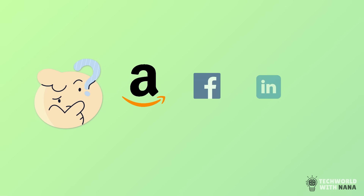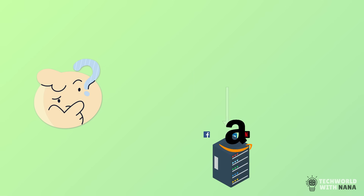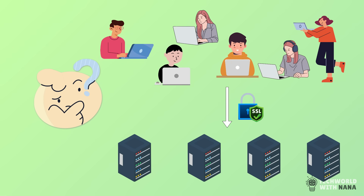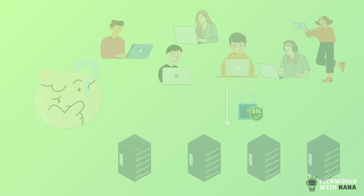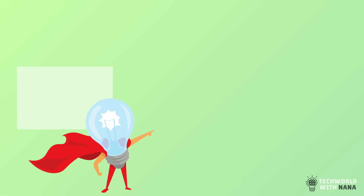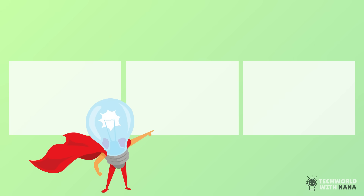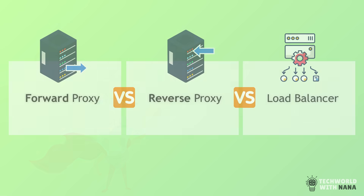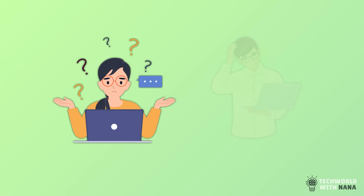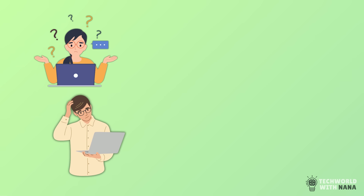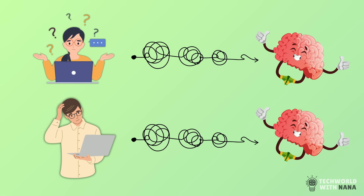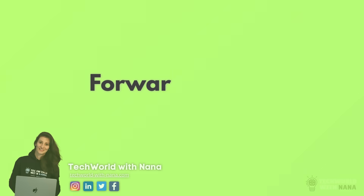Have you ever wondered how some of the largest websites handle millions of users simultaneously without crashing, or how they transfer your data securely when directing you to the right server? In this video, we're going to dive into the three critical web components: proxies, reverse proxies, and load balancers. Whether you are an engineer or just curious about how the internet works behind the scenes, we will break down these complex concepts in simple, easy-to-understand terms. So let's get started.